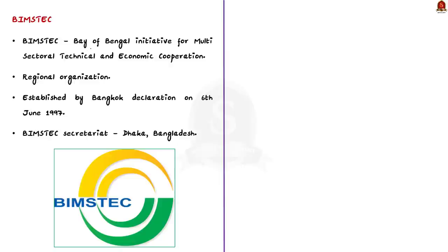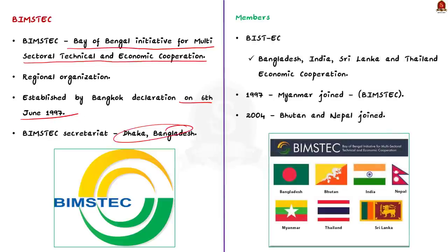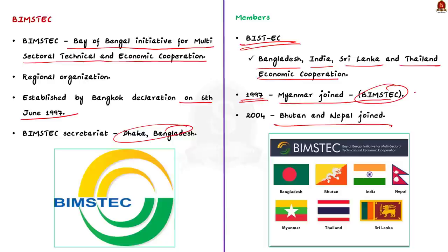BIMSTEC stands for Bay of Bengal Initiative for Multisectoral, Technical and Economic Cooperation. It was established through the Bangkok Declaration on June 6, 1997. The BIMSTEC Secretariat is located in Dhaka, Bangladesh. Let us take a closer look at the members of BIMSTEC. Initially, it was known as BIST-EC, which stood for Bangladesh, India, Sri Lanka and Thailand Economic Cooperation. However, in 1997, Myanmar joined this grouping and since then, it has been known as BIMSTEC. Bhutan and Nepal joined BIMSTEC in 2004. Currently, BIMSTEC has seven member states.